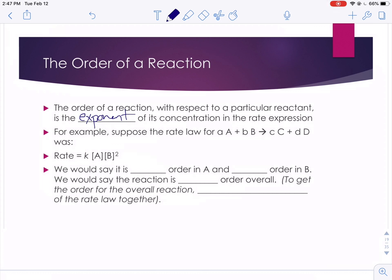So let's say if we had that generic reaction A plus B goes to C plus D, and let's say we figured out the rate law was rate equals K times A times B squared, the terminology we would use is to say that it's first order with respect to A and second order with respect to B.